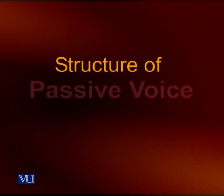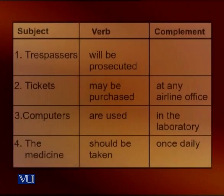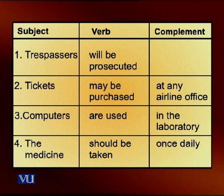In active sentences, the subject performs the action of the verb. In passive sentences, the subject receives the action of the verb. The direct object of the active sentence becomes the subject of the passive sentence, because every sentence in English must have a subject. Passive sentences can be formed only by transitive verbs, which take direct objects.